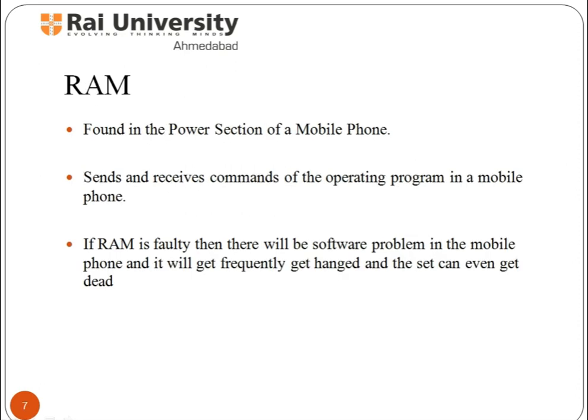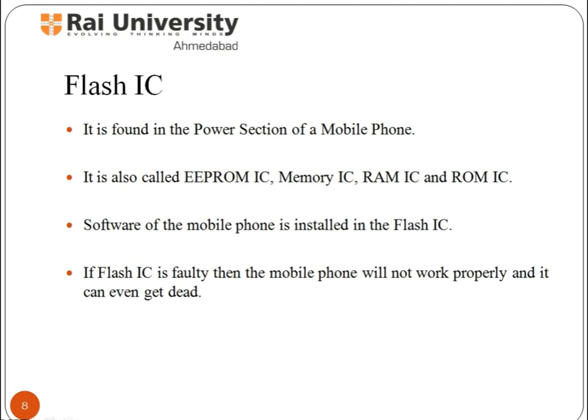RAM, most of you would know, is random access memory. It is faster memory compared to your permanent storage, which includes your SD memory card, internal and external, which your processor uses to compute data. It is faster to retrieve data required for processing from your RAM, rather than to load it from your permanent storage, which takes time.